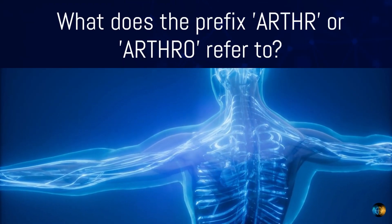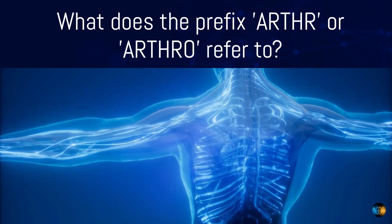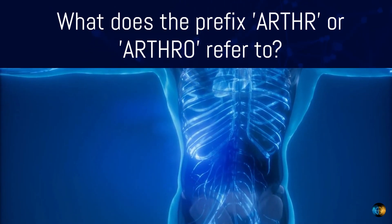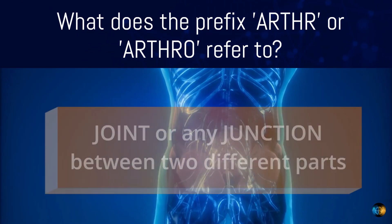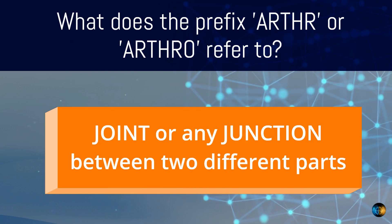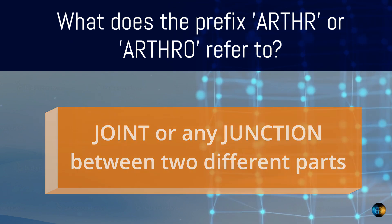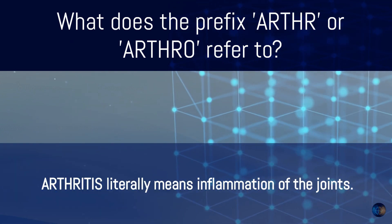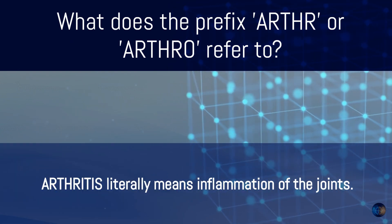What does the prefix arthro refer to? It refers to a joint, or any junction between two different parts. So, arthritis literally means inflammation of the joints.